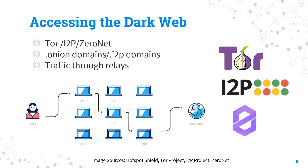Tor works as a three-layer proxy where each node only knows the IP address of the next or previous node — the entry node doesn't know about the exit node and vice versa, so the locations of nodes are also protected. These nodes are volunteer-based; Tor has about 6,000 relays. I2P is also becoming more popular. The major thing about Tor is that each node only knows the IP of the adjacent node, protecting location information throughout the circuit.